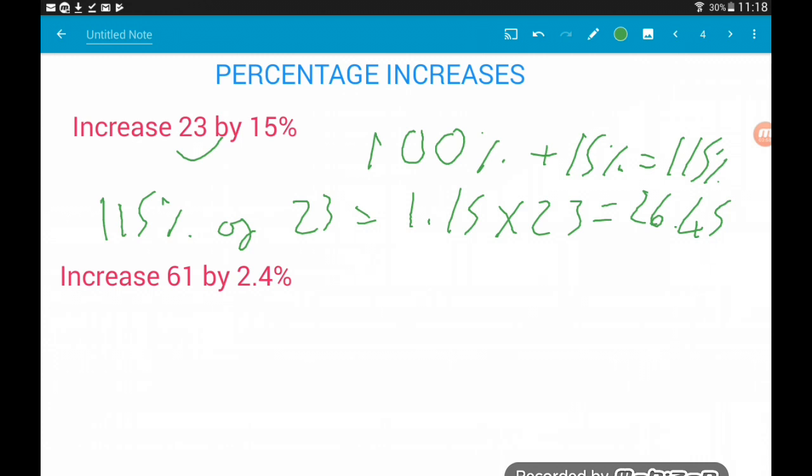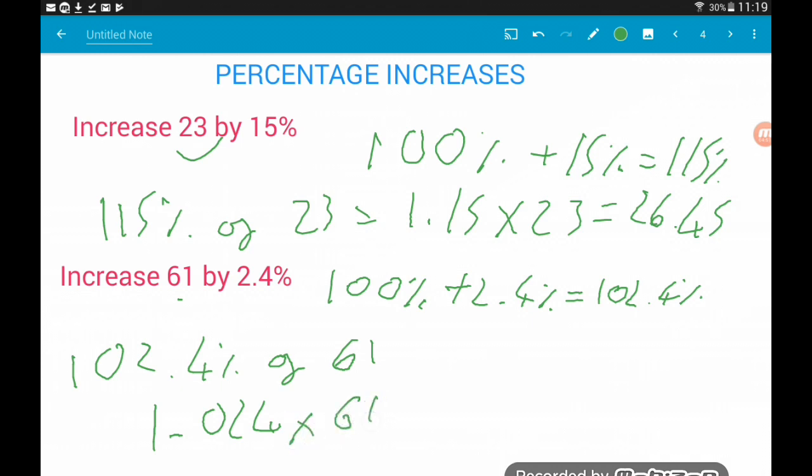Okay, question two, increase 61 by 2.4%. So here, 61 is the 100% that we start with. So we're starting off with 100%. Then we're increasing it by 2.4%. So 100% add 2.4% is 102.4%. So we want to find 102.4% of 61. Now this is where our decimal multiplier comes in. 102.4% divided by 100 is 1.024. So we're going to do 1.024 times 61 and that gives us 62.464.